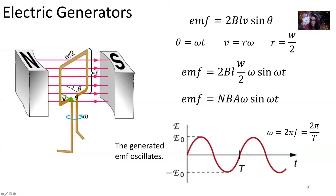So the motional EMF is equal to 2 times the magnetic field times the length times V, where V equals R times omega, and R is W over 2. So we get W over 2 times omega times sine of omega times time — since theta equals omega times time. The twos cancel, and our EMF, for N turns, equals N times B times area times omega times sine of omega t. That's the EMF generated as we crank our generator.